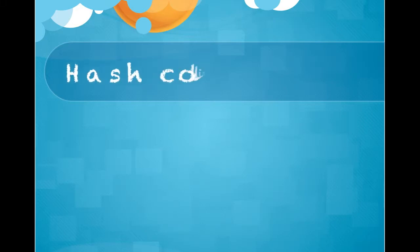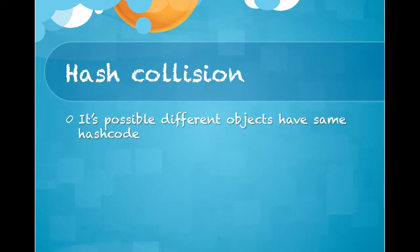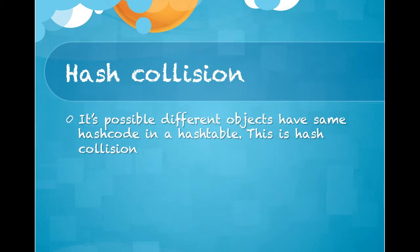What is a hash collision? It is possible that two different objects might return the same hash code in a hash table. This is called a hash collision.